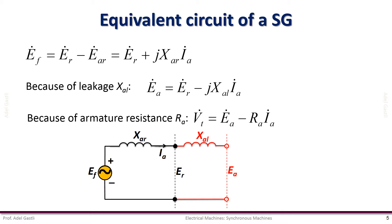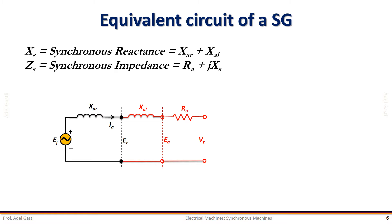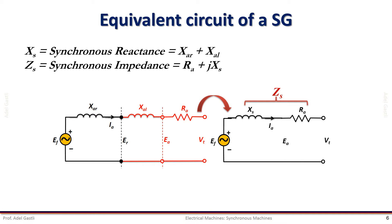Moreover, accounting for the voltage drop across the armature winding resistance RA, we can obtain the terminal voltage as given by this equation. This can be represented by this equivalent circuit. As you can notice, there are different voltages at different levels of the air gap and armature windings. Considering the synchronous reactance XS, which is equal to the sum of the armature reaction reactance and the leakage reactance, and the synchronous impedance ZS equal to the armature resistance RA plus J multiplied by XS, we can redraw the equivalent circuit as shown here, where XS takes into account all the fluxes including the magnetizing and leakage flux produced by the armature current.